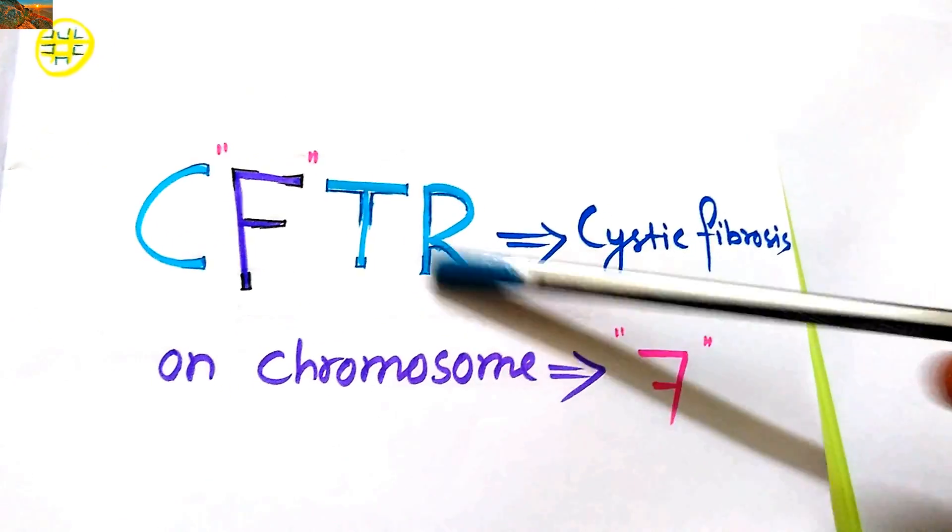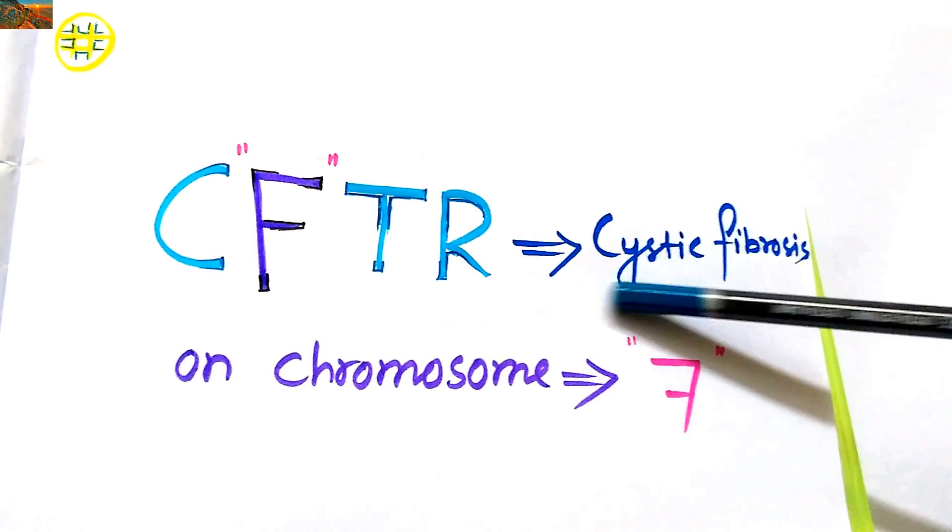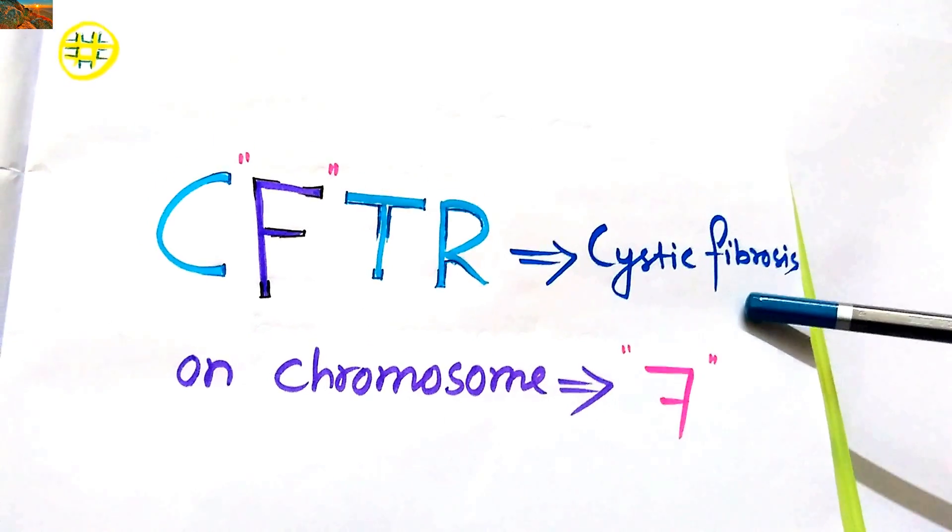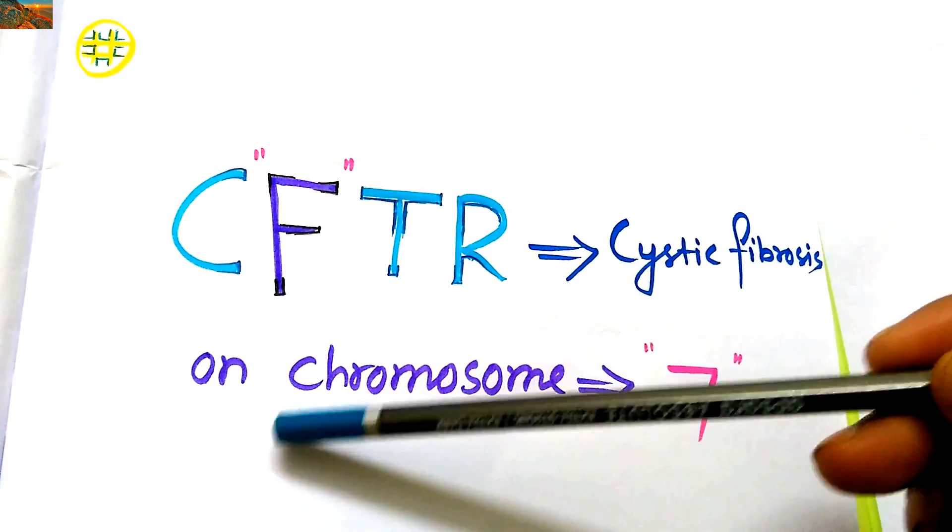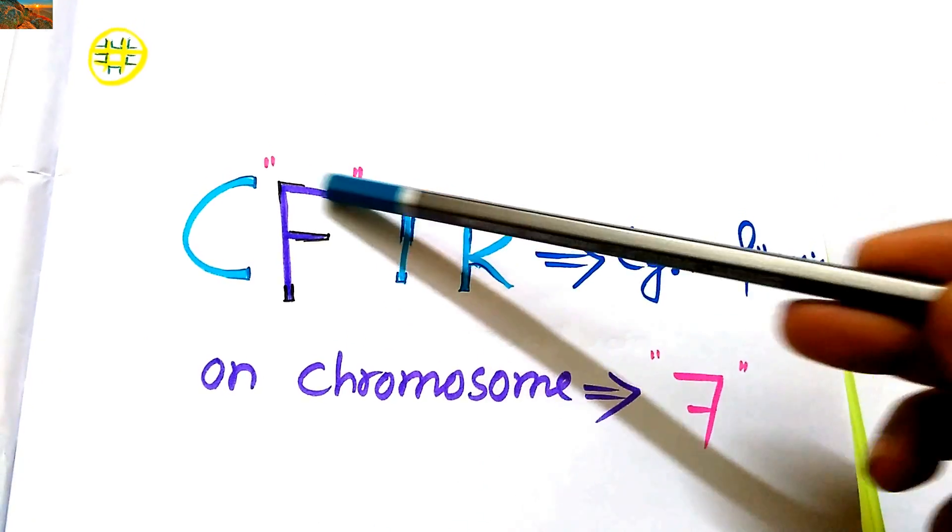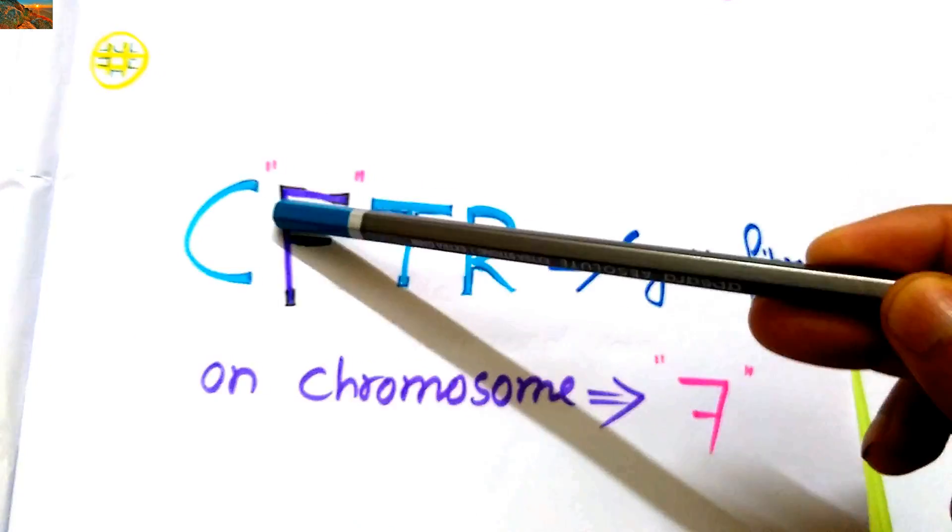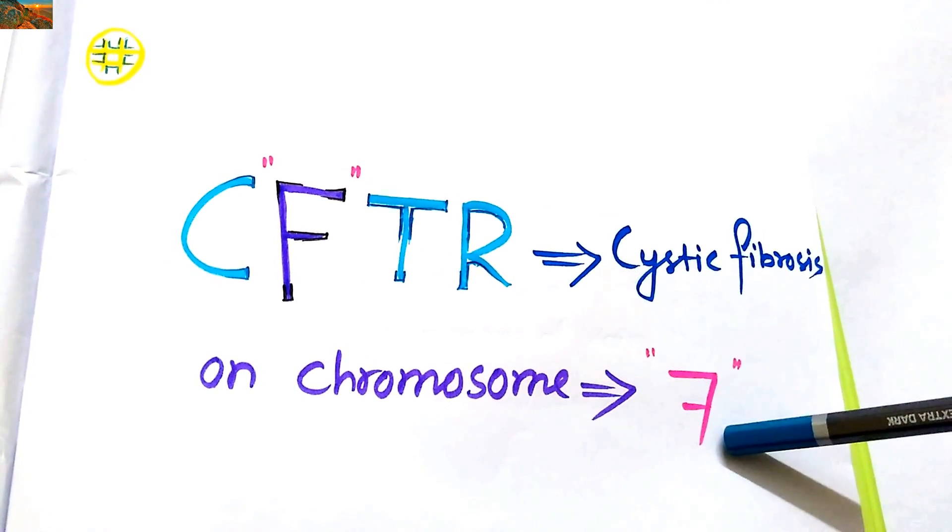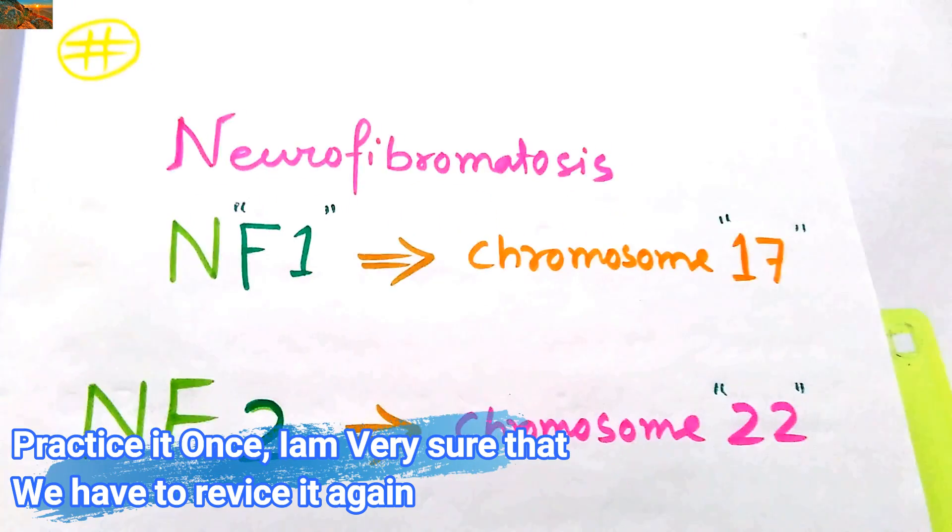Now it is CFTR gene which is responsible for cystic fibrosis. From the name itself we can find that it is located on chromosome number 7. The F looks like 7.